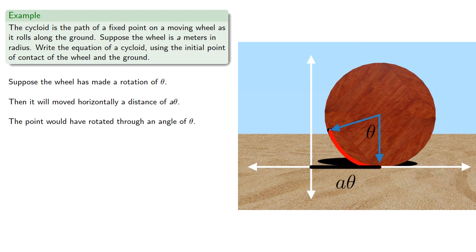The coordinates of a point are a way of expressing how to get to that point from the origin. To get to this point we might go out horizontally a distance of aθ and then back a distance of a sin θ. Consequently our x coordinate would be aθ minus a sin θ.